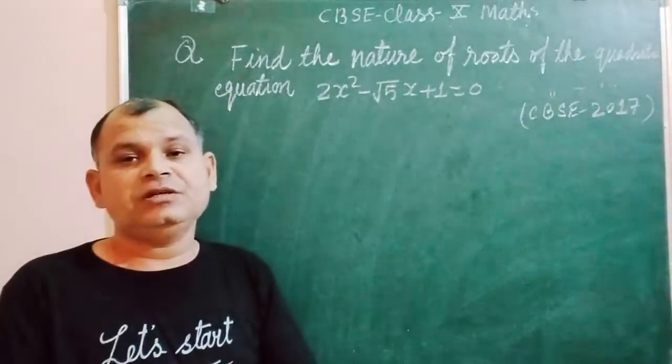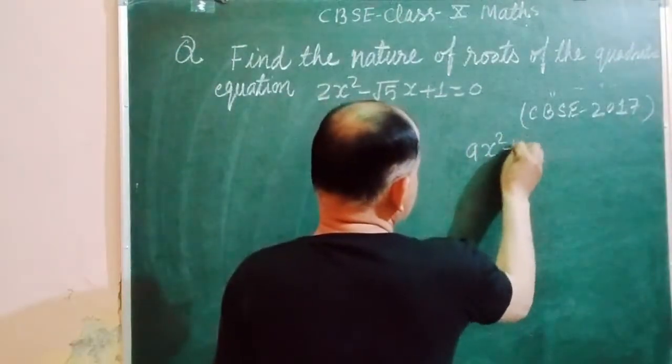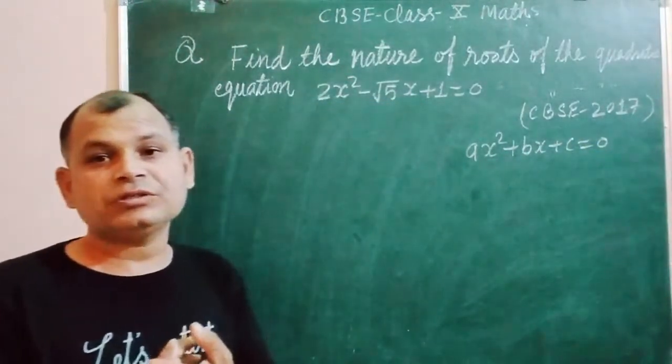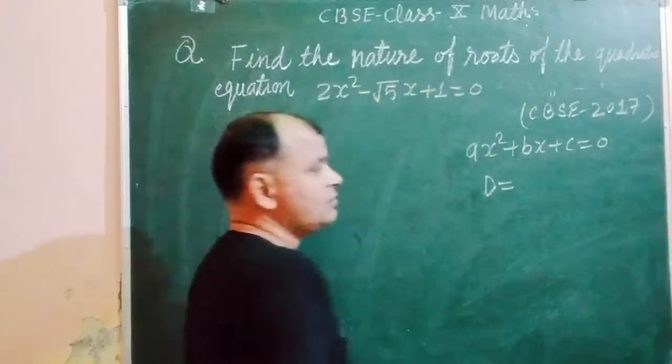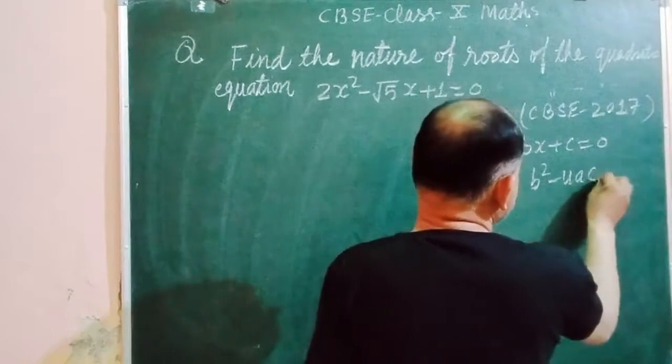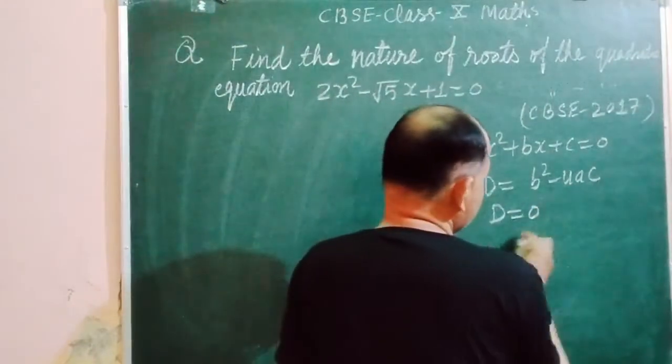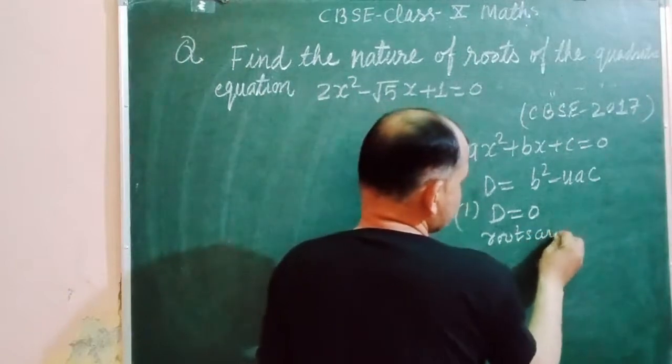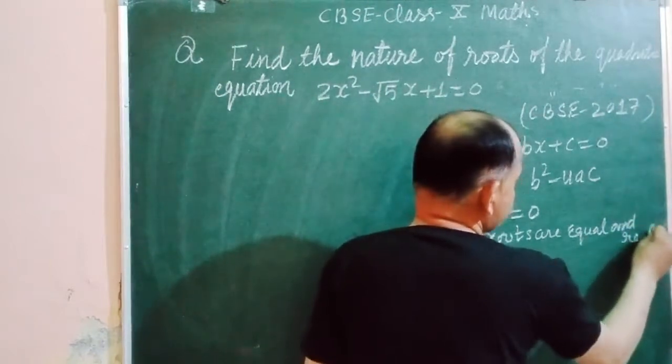So first let's understand the concept related to this question. You know that a quadratic equation ax² + bx + c = 0 has two roots. First we need the discriminant of this quadratic equation which is b² - 4ac. So let's see, if the value of D = 0 then roots are equal and real.